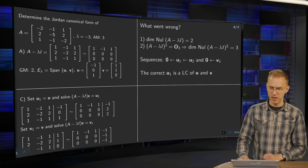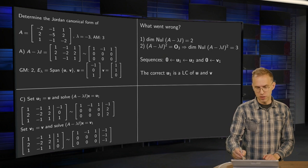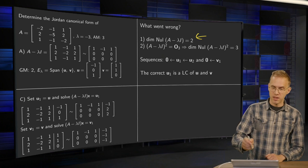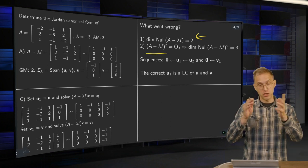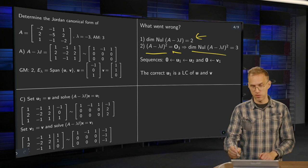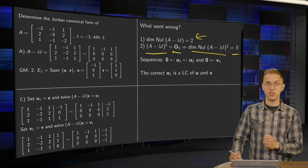So what went wrong? Now we know the dimension of Nul(A minus lambda I) equals 2, geometric multiplicity. Now if you compute (A minus lambda I) squared, you get the zero matrix. So the dimension of Nul(A minus lambda I) squared equals 3.